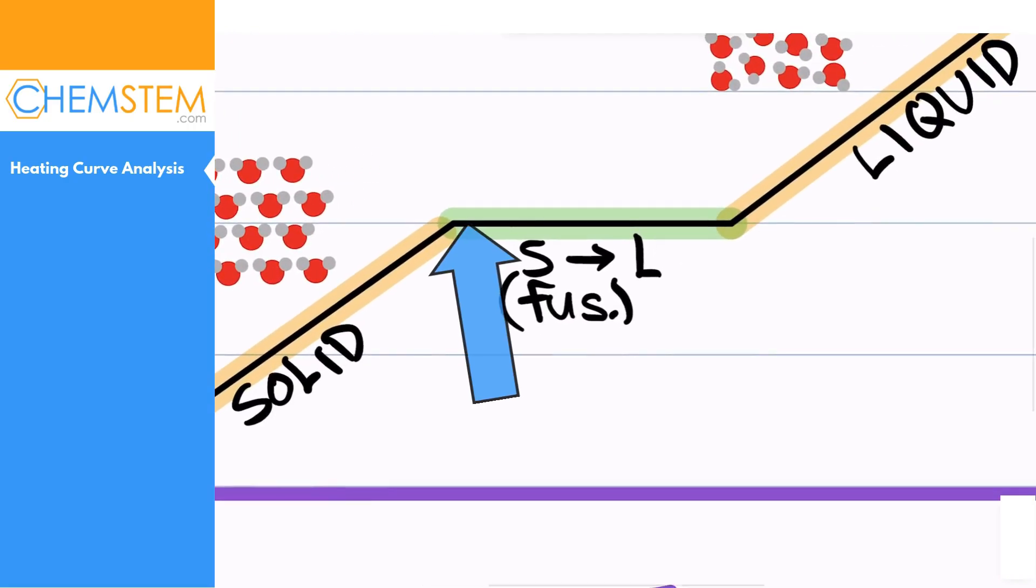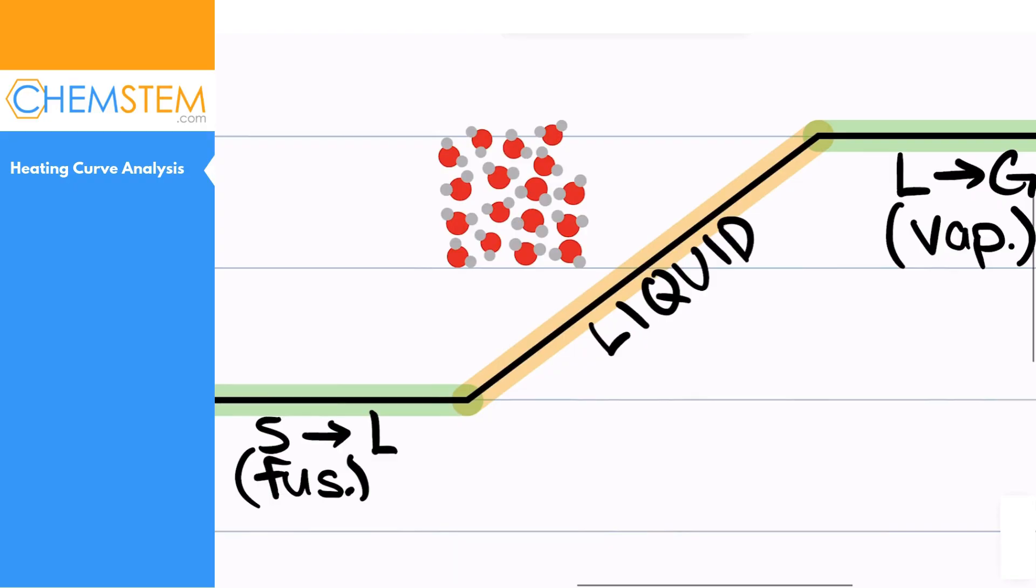Now we're adding more and more heat energy but our temperature is not increasing because we're simply using that energy to break the intermolecular forces that are keeping us so locked into place. Eventually all of the solid will melt and our temperature will rise again as we're just a bunch of liquid now.